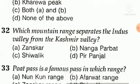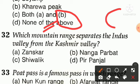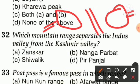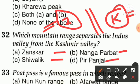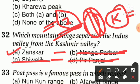Question number thirty-two: which mountain range separates the Indus Valley from the Kashmir Valley? Option A — Zanskar, option B — Nanga Parbat, option C — Shivalik, option D — Peer Panjal. Peer Panjal is not the answer, Nanga Parbat is not the answer, Shivalik is not the answer. The answer is Zanskar Range — the Zanskar Range separates the Indus Valley from the Kashmir Valley.